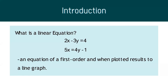Below are examples of linear equations: 2x minus 3y, 3y equals 4, and 5x equals 4y minus 1. Notice that these equations have degree 1, meaning 1 is their highest power, with no square or cube terms, and when plotted, a line will form the graph.